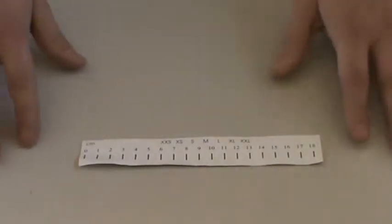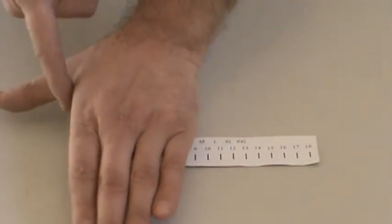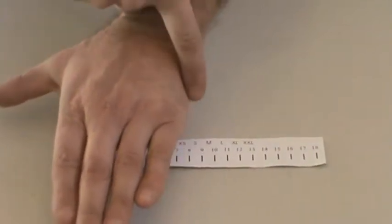All right, Kevin here with MyATVs.com. I'm just going to show you quickly how to measure for an off-road glove. What you want to do is measure your hand from the inside where your thumb is to the far outside.